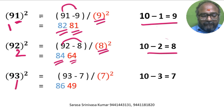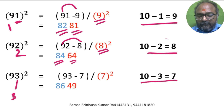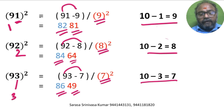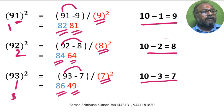Units digit is 3. 10 minus 3 is 7. 93 minus 7 is 86. 7 square is 49. So 86, 49 is the answer.